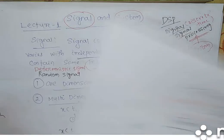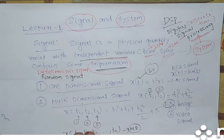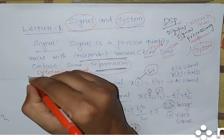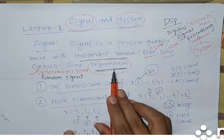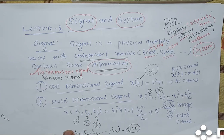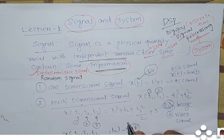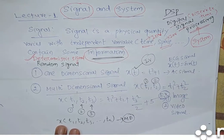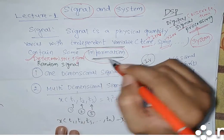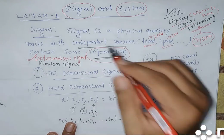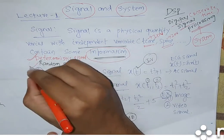This is about deterministic and random signals. Our point is: in case of deterministic signal, it is easy to extract the information, but in case of random signal, it is difficult to extract information. But unfortunately, we are dealing with random signals only. A signal is a physical quantity that varies with some independent variable — time or space — and contains some information. I have given an idea about two types of signals: deterministic and random.